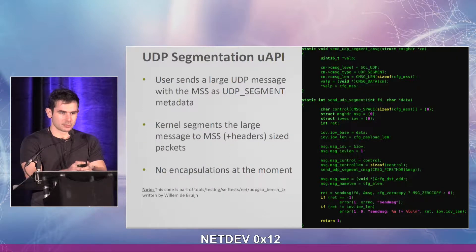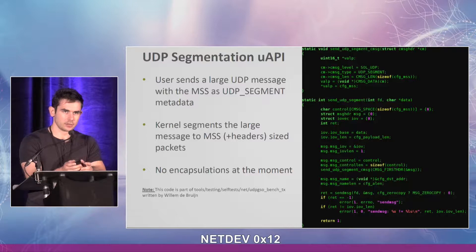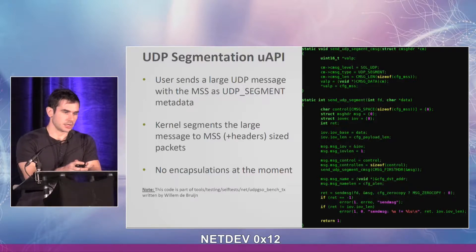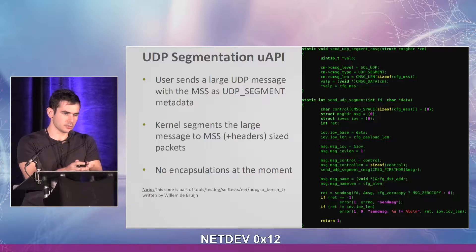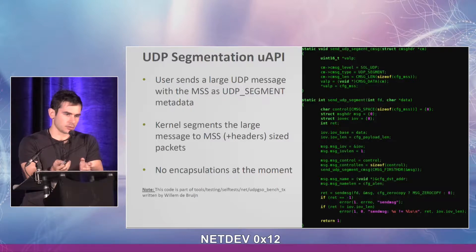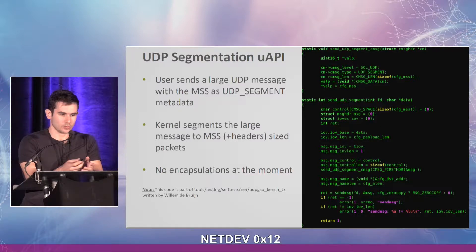A recent patch introduced segmentation for UDP with a new user API, where a user sends a large UDP message with the MSS provided using the UDP segment auxiliary data, as we can see in the code on the right side. The kernel will segment the large message into MSS-sized packets, including the UDP headers. However, no encapsulation is supported at the moment — it's just the UDP protocol. The code here is taken from the testing framework provided by William when he sent the patch, so it's available for everybody.